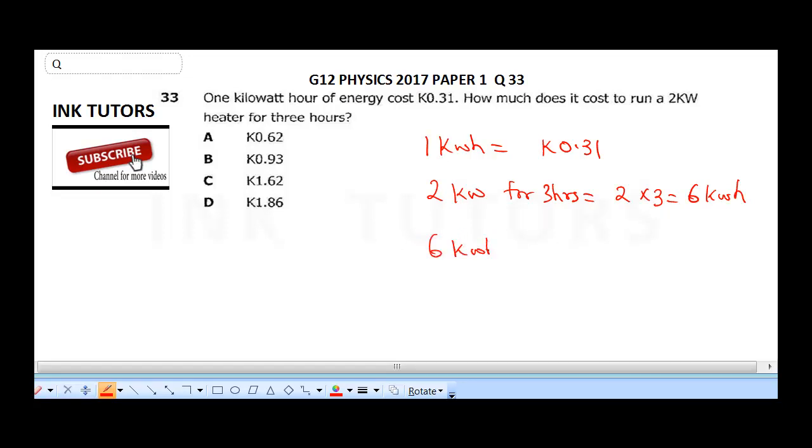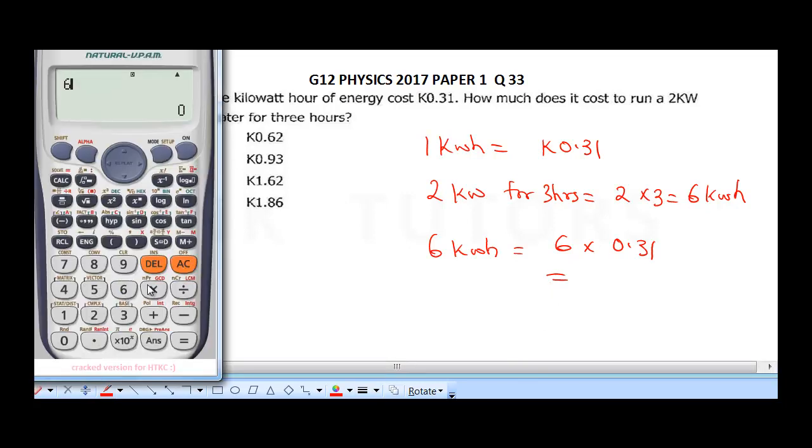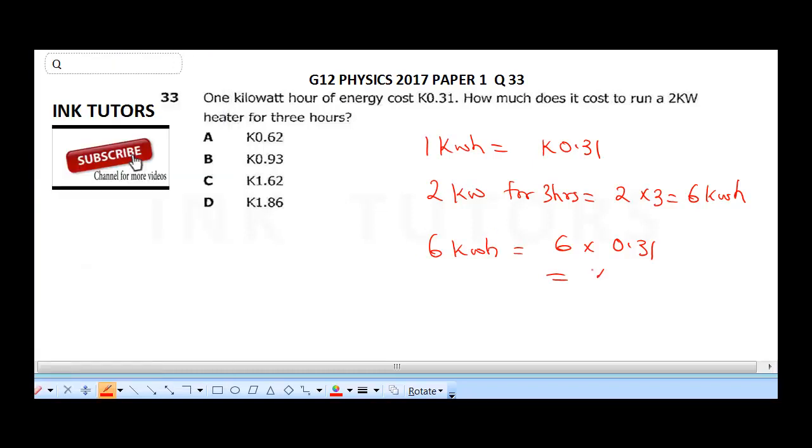Now, if 1 kilowatt hour costs K0.31, 6 kilowatt hour is going to give us, that is 6 times 0.31. Now, when you multiply this, let's bring in our calculator. It's going to be 6 times 0.31. It's going to give us 1.86. So, our answer, it's K1.86. So, that's our final answer. And the correct answer, it's D.